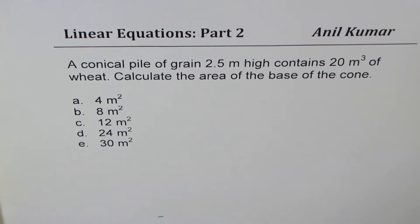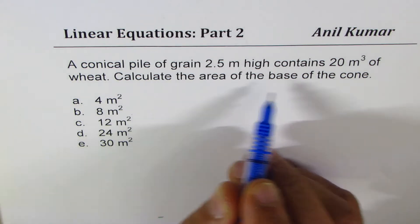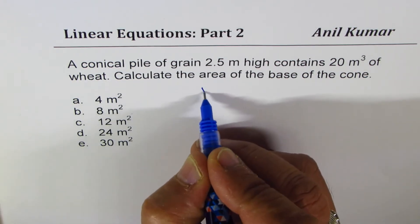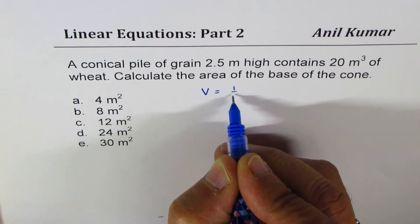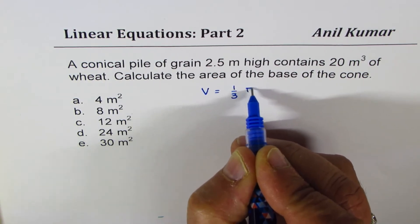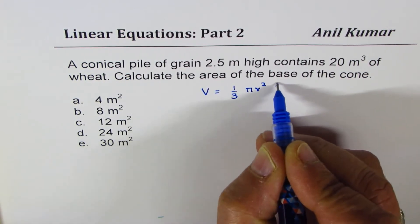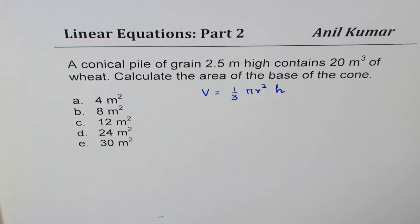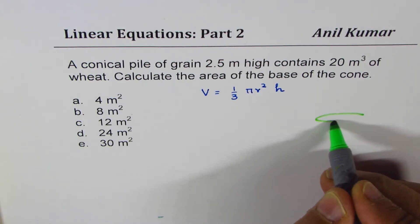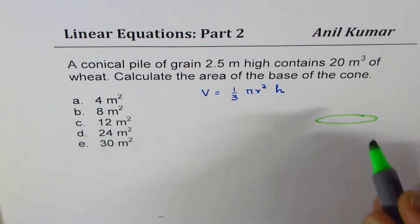For some of you, let me give you the formula for the volume of a cone. Volume of the cone is (1/3)πr²h, where the area of the base is πr².